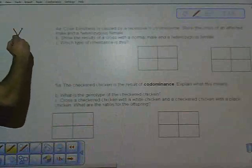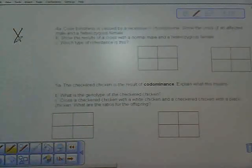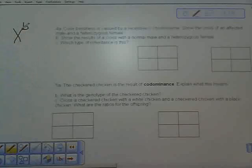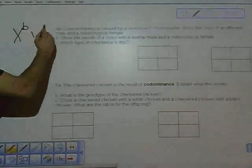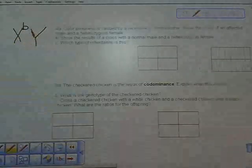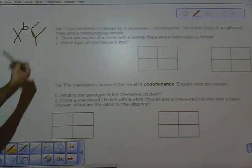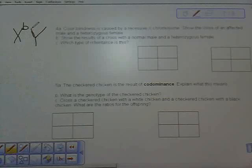An affected male: since colorblindness is a recessive trait, we show a recessive letter superscripted to the X. And since it's a male, the other letter is a Y. Since there are no two Xs here for the male, since he has one affected X, he's affected by color blindness.